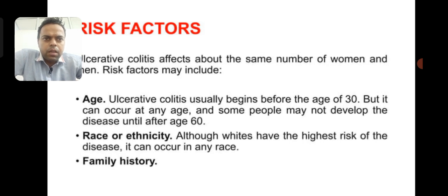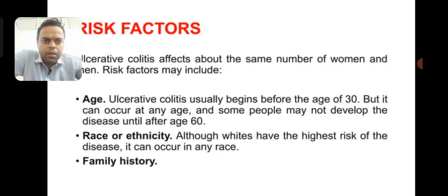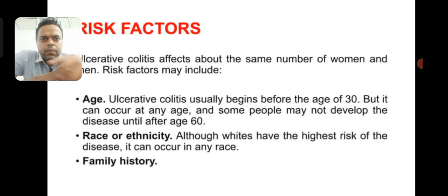Ulcerative colitis affects the same number of women and men. Risk factors include age — the disease usually begins before age 30, but it can occur at any age, and some people may not develop the disease until age 60. Race or ethnicity is also a factor; although white people have a higher risk, it can occur in any race. Family history and genetics are also risk factors for ulcerative colitis.